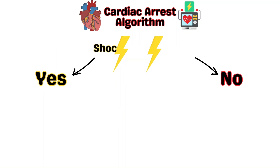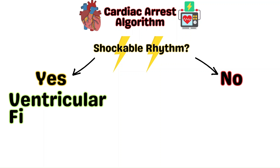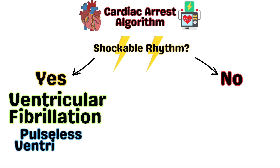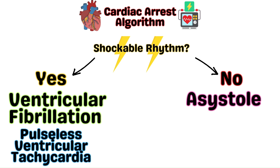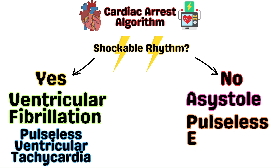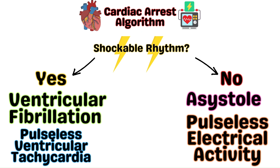From here, the most important question will be: are they in a shockable rhythm? The rhythms associated with cardiac arrest include asystole, pulseless electrical activity, ventricular fibrillation, and pulseless ventricular tachycardia. The two shockable rhythms are ventricular fibrillation and pulseless ventricular tachycardia. The non-shockable rhythms are asystole and pulseless electrical activity.